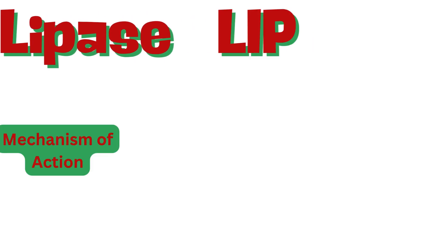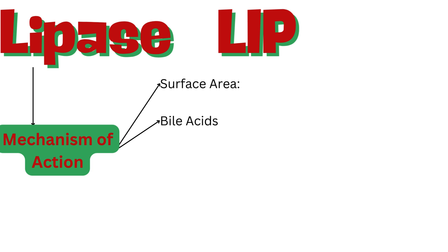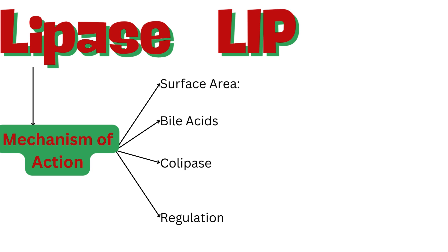Lipase's activity is influenced by several factors. Surface area — its effectiveness depends on the surface area of the dispersed substrate. Bile acids prevent interference by other proteins by lining the substrate's surface. Colipase binds to bile salts, forming a complex that anchors lipase to the substrate. The secretion of lipase, colipase, and bile acids is controlled by the release of cholecystokinin and secretin.